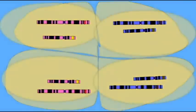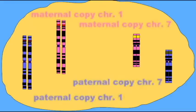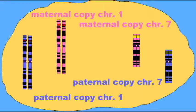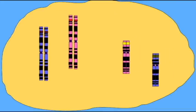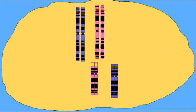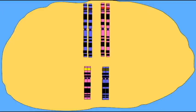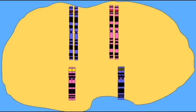While some gametes will possess the normal version of gene 1 and the mutant version of gene 2, others possess the mutant version of gene 1 and the normal version of gene 2. These genes are assorting independently.